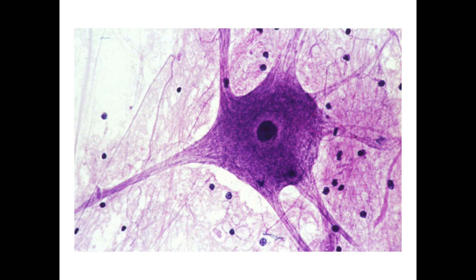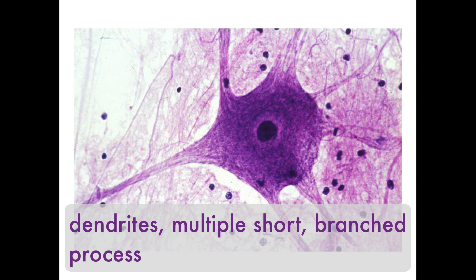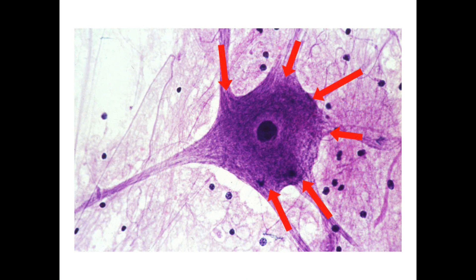Extending from the neurosoma are usually multiple short branched processes called dendrites. Looking at the right side of the cell, you can see all the different branches — the dendrites that extend out. These receive signals from other cells and conduct messages back to the neurosoma.